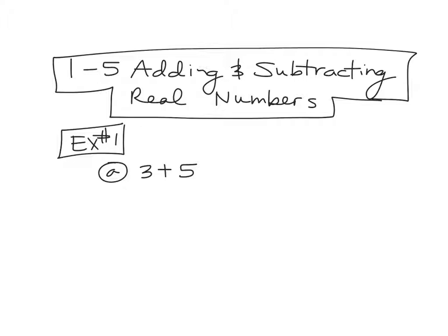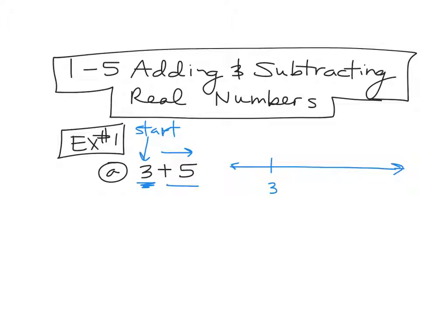We're going to do it on a number line. So a number line is just going to be something like that. When we do adding on a number line, your first number is always where you're going to start. So this number here is your starting point on the number line — you're going to put a little hash mark and a 3. We're adding a positive number. When you add a positive, you move to the right on your number line. So that means your 3, your starting number, should be somewhere closer to the left. So here's where we're starting — we're going to add 5 to it. So we go this way, 5 units.